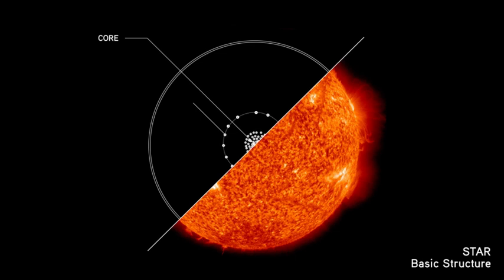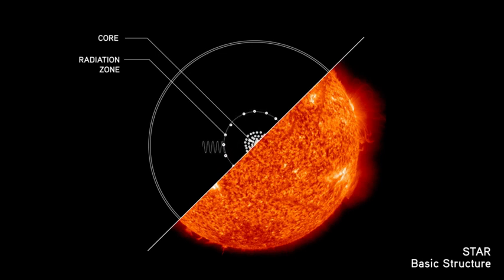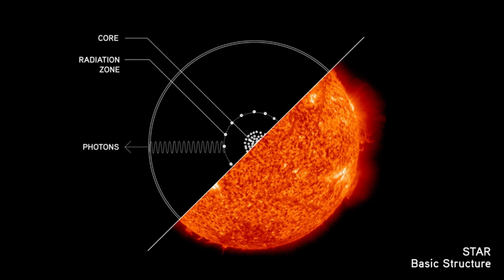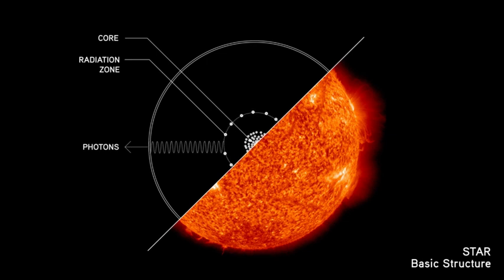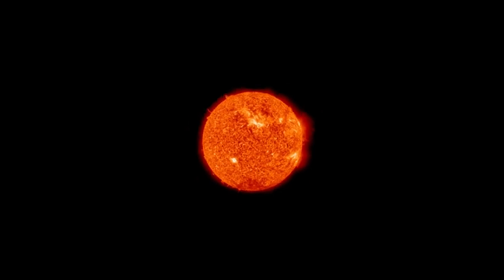Just around the core, you have a sort of store of protons ready to be fused eventually when they sink down into the center. Photons of energy and light from the center slowly work their way through the plasma, sometimes taking thousands of years until eventually they reach the surface and flash out into space. So stars have a lot of structure.